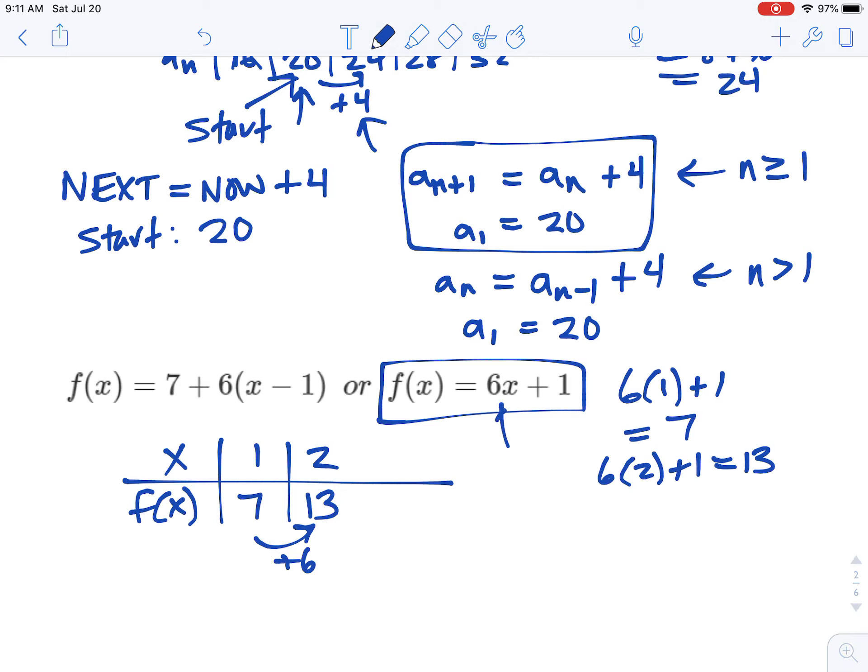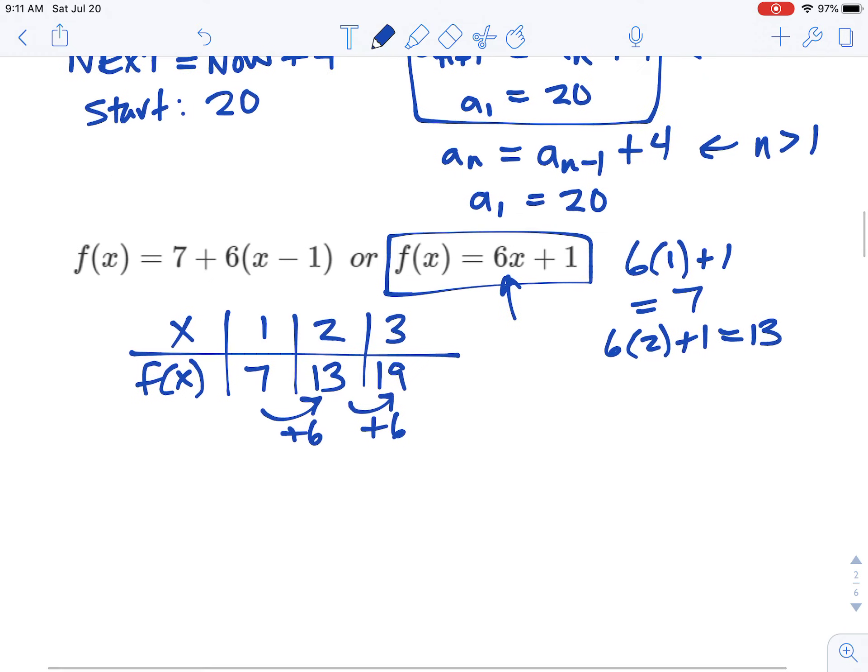And you can see what the change is. Plus 6, which again, we know it's plus 6 because the slope was 6. So 3 would be 19. Again, there's the plus 6. So for our recursive format, we want to say the same thing as before, same kind of structure here. So the next is the now plus something starting at something. So we're going to start at 7, and we're going to add 6 each time. So I want to say a recursive relationship that says that same thing.